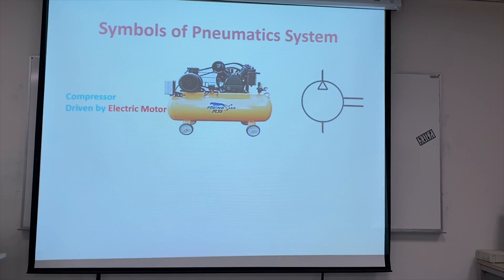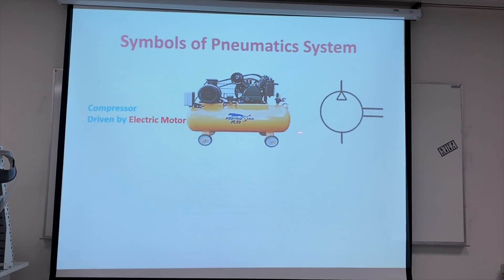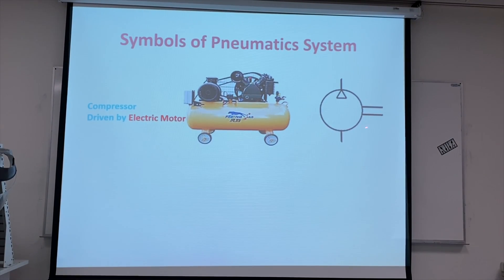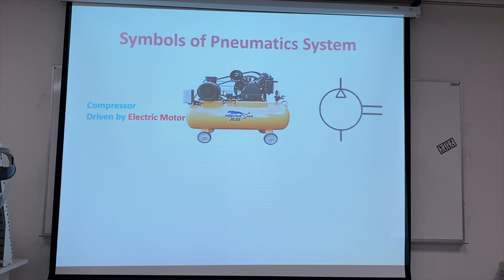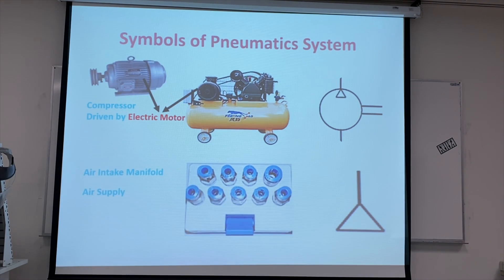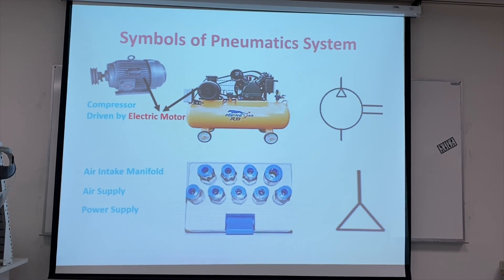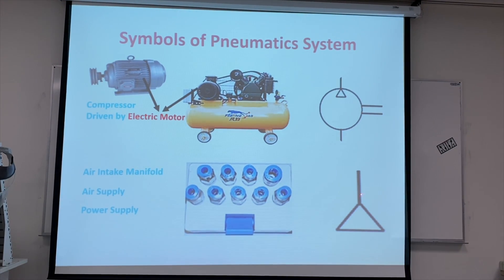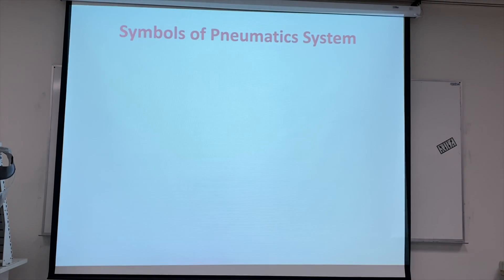In the pneumatic system we also use symbols. This is the compressor and this is the symbol for the compressor. Similarly, we also use an air intake manifold or power supply, and we use this symbol — like a triangle — for the air supply system.